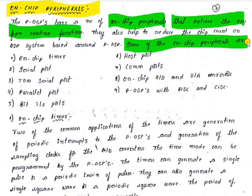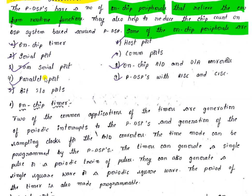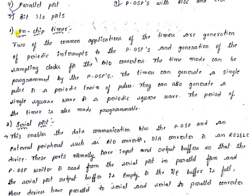Some of the on-chip peripherals are: on-chip timer, serial port, TDM serial port, parallel port, bit input/output port, host port, common ports, on-chip A2D and D2A converters, and programmable DSPs with RISC and CISC processors. Now we will discuss them one by one.